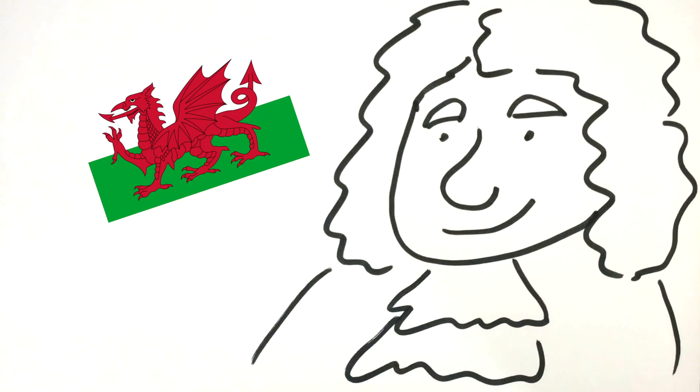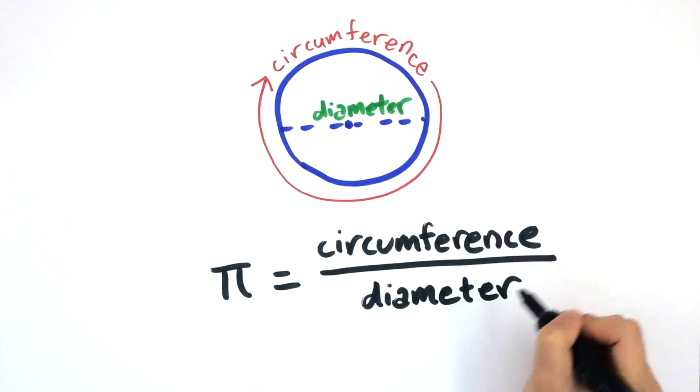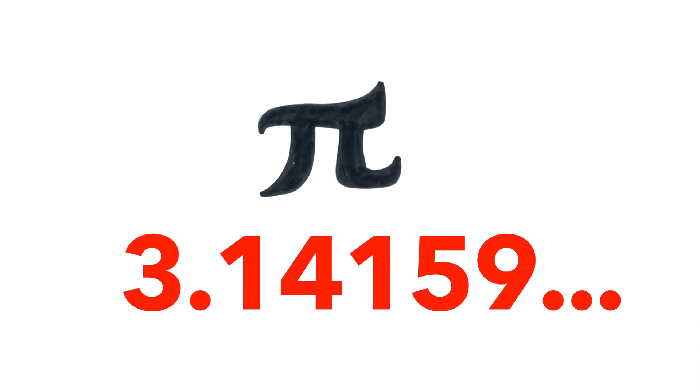It wasn't until 1706 that William Jones used pi as the ratio of a circle's circumference to its diameter. And that is how pi came to represent 3.14159, the irrational constant we know it as today.